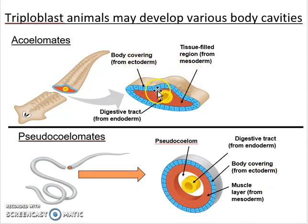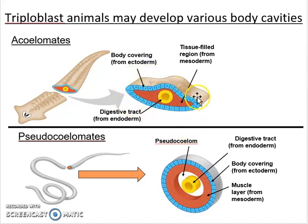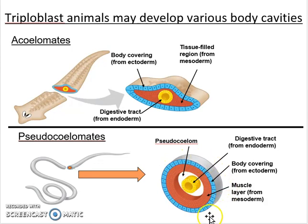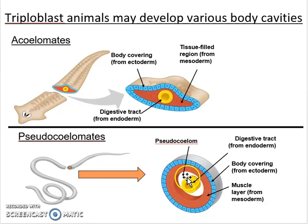Acoelomates do have three layers of tissue, but the middle layer derived from the mesoderm is just a tissue-filled region separating the endoderm from the ectoderm — the digestive tract from the external skin. There is another type known as the pseudocoelomate, meaning a fake body cavity. Found in a variety of worm-like creatures, they have an external body covering from the ectoderm and a digestive tract from the endoderm, but the body cavity layer is separated from that digestive tract, with muscle layers coming from the mesoderm.